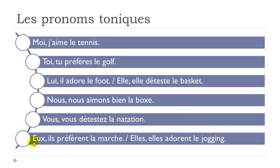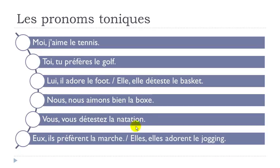The last two examples. Masculine plural: EUX, ILS PRÉFÈRENT LA MARCHE. LA MARCHE comes from MARCHER, to walk. Feminine plural: ELLES, ELLES ADORENT LE JOGGING. Now let's read them all one more time: MOI J'AIME LE TENNIS. TOI TU PRÉFÈRES LE GOLF. LUI IL ADORE LE FOOT. ELLE ELLE DÉTESTE LE BASKET. NOUS AIMONS BIEN LA BOXE. VOUS DÉTESTEZ LA NATATION. EUX ILS PRÉFÈRENT LA MARCHE. ELLES ELLES ADORENT LE JOGGING.